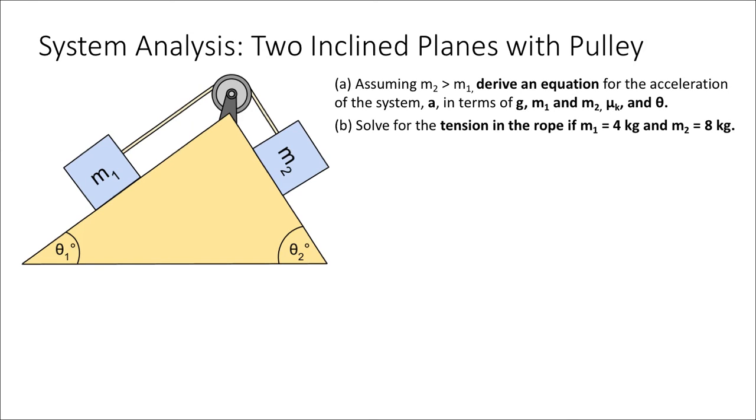This is our final example, applying Newton's second law to connected objects involving pulleys. This time, we have everything together. We have two boxes that are connected by a pulley, and they are both on inclined planes. We're going to assume there is no friction for simplicity.